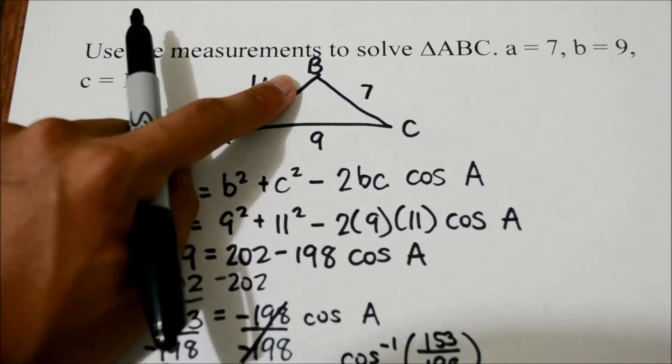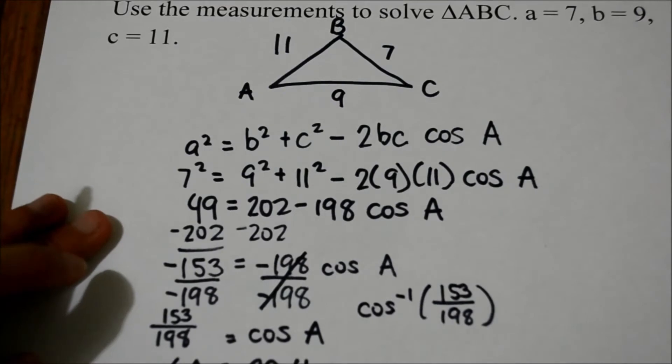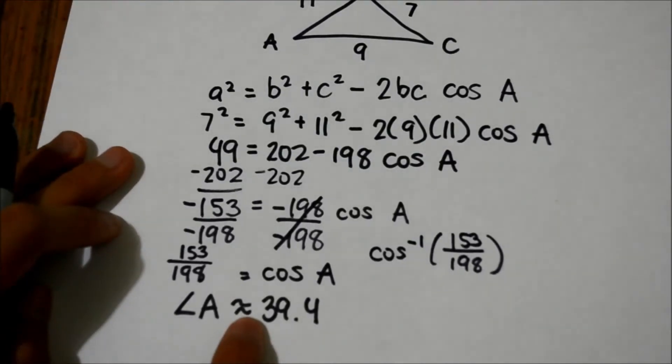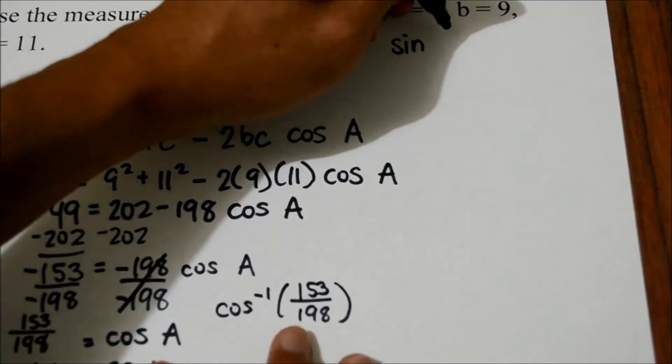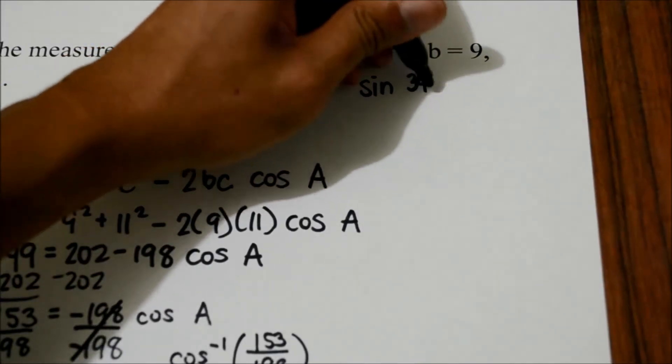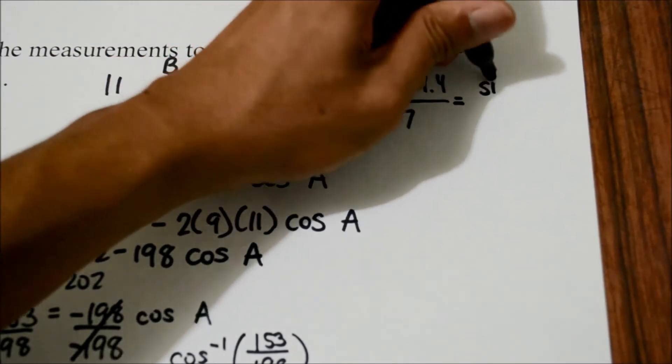Now to find the angle of B, we can use the law of sines, in which the sine of A, now the sine of 39.4 degrees over 7, is equal to the sine of B over 9.